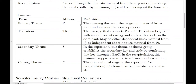After the primary theme, oftentimes there is a transition, abbreviated TR. This is the passage that connects the primary theme to the secondary theme. Most often, the transition will begin with an increase of energy and end with a lock on the dominant. The increase in energy can come from things like denser orchestration, louder dynamics, or a change in some sort of accompanimental figure. At the end of the transition, there'll usually be some sort of lock on the dominant — either an elaborate dominant pedal or sometimes something as short as just a dominant chord.